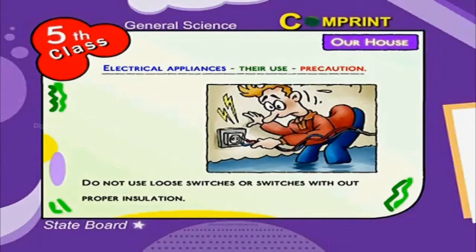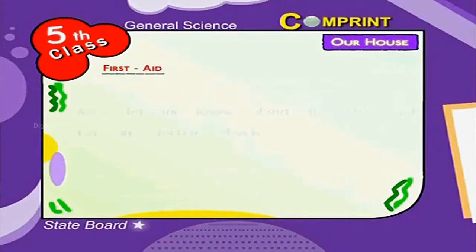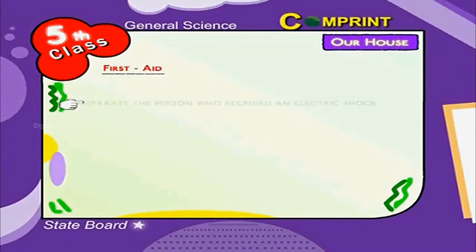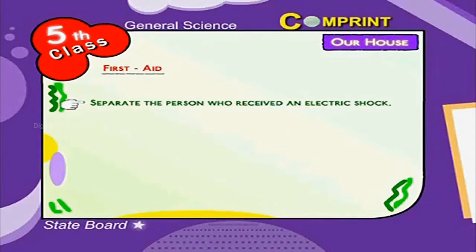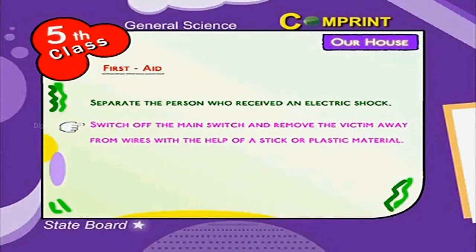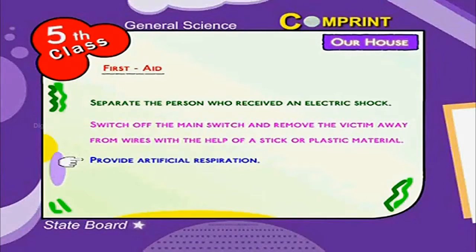First aid for an electric shock: Separate the person who received an electric shock — switch off the main switch and remove the victim away from wires with the help of a stick or plastic material. Provide artificial respiration and take them to a doctor immediately.